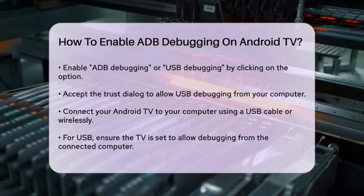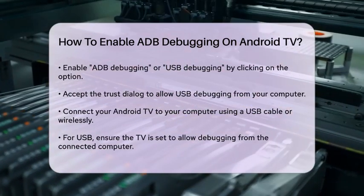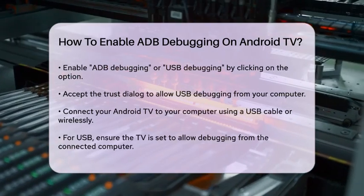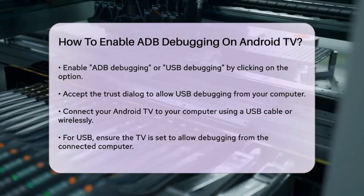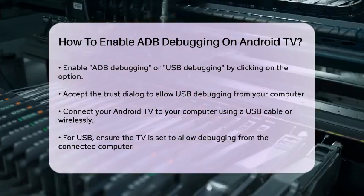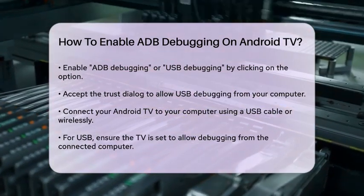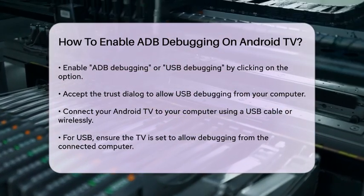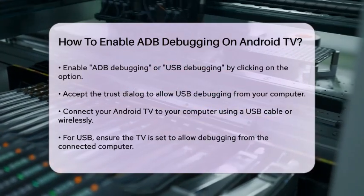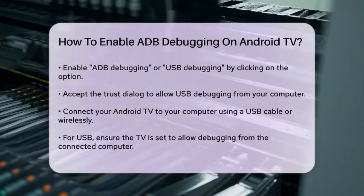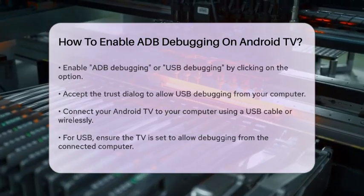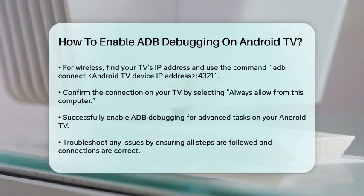Now, to connect your Android TV to your computer via ADB, you can use either a USB cable or a wireless connection. If using a USB cable, connect the TV to your computer and ensure the TV is set to allow USB Debugging from that computer. For a wireless connection, you need to know the IP address of your Android TV. Open a terminal on your computer and enter the command: ADB Connect [Android TV IP address]:5555.